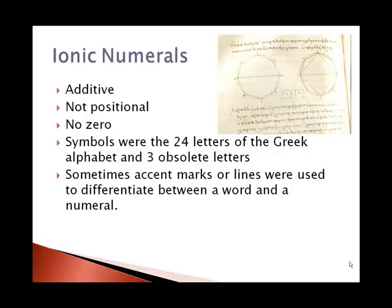The ionic numerals, on the other hand, the newer system, is also additive, is also not positional, and there's no zero. But the difference is the symbols that were used. They used 27 letters, Greek letters, the 24 from the Greek alphabet that I've asked you to remember. And then to make 27, they used three other letters. These symbols were for the numbers 1 through 9, 10 through 90 counting by tens, and 100 through 900 counting by hundreds.